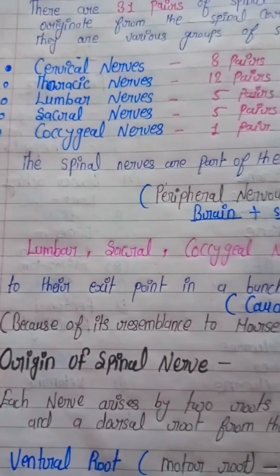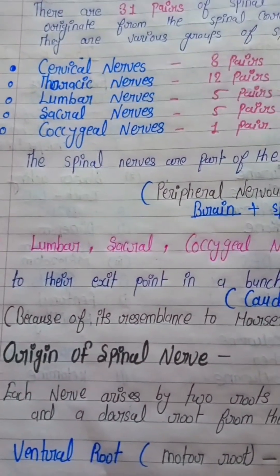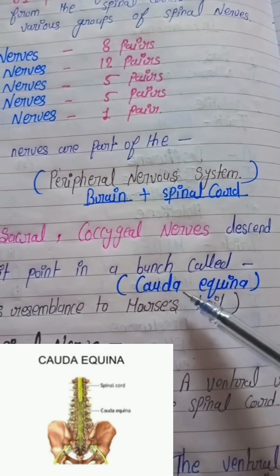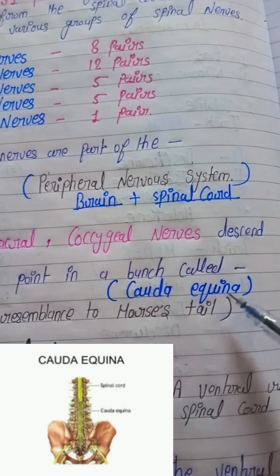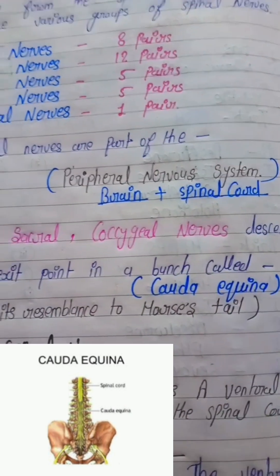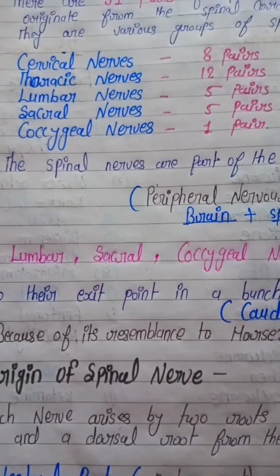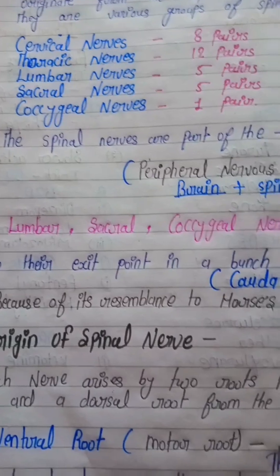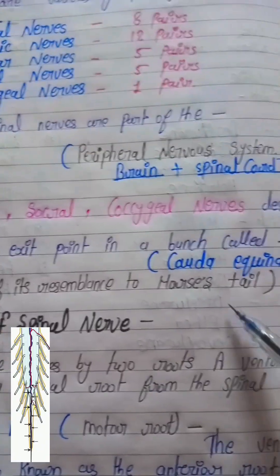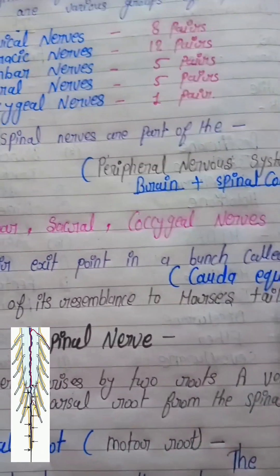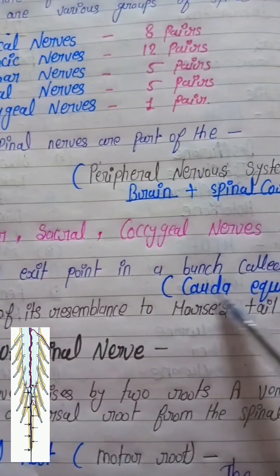These descending branches form a structure called the cauda equina. It is given this name because it resembles a horse's tail.